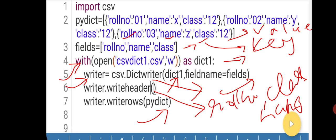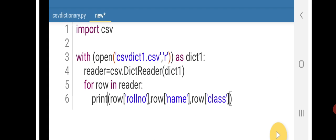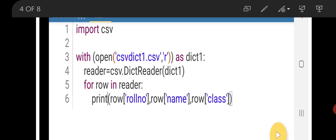Now in the next slide we have seen reading a CSV dictionary file. In the previous slide we wrote the data in dictionary file format. Now we are going to see how to read the data from the dictionary file. Here we import csv and open the file: with open csv_dict1 in read mode.